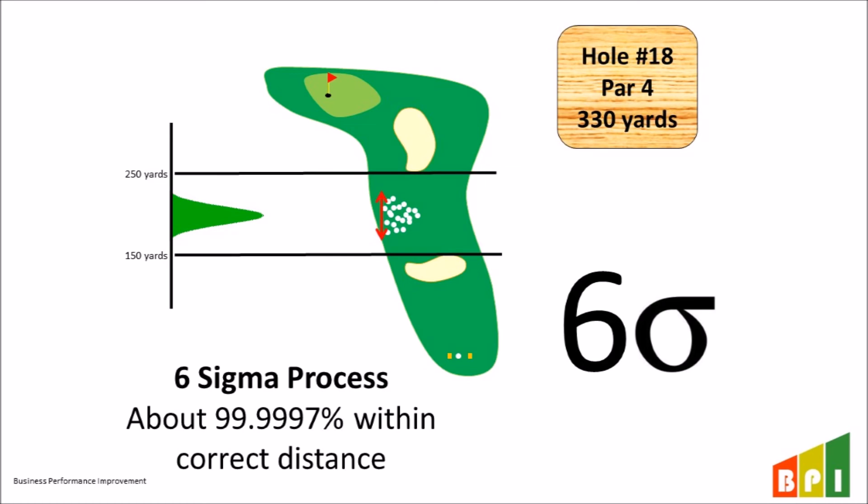If the process is performing at a Sigma level much lower than where the company wants it to perform, based on the probability of success, then we need to evaluate ways to reduce the variation. In the golf example, to reduce variation in the tee shot distance, we would evaluate the golfer's technique, consistency of their backswing, type of club being selected, adjustments made for wind and weather, and any other factors that could cause the distance to vary.